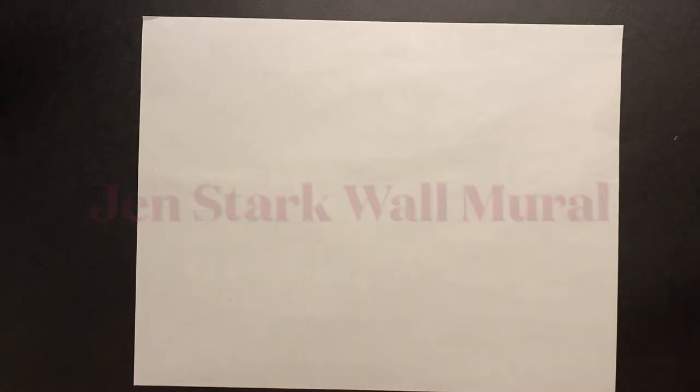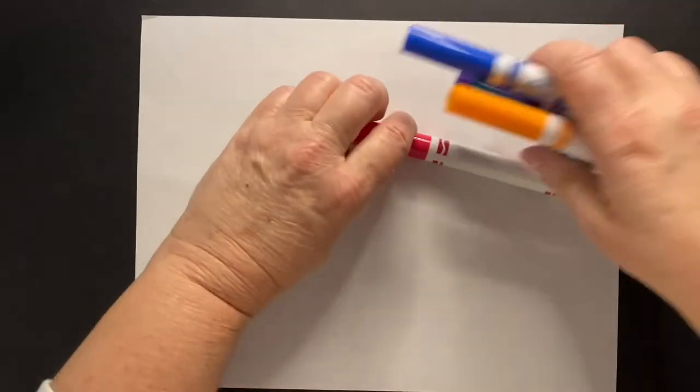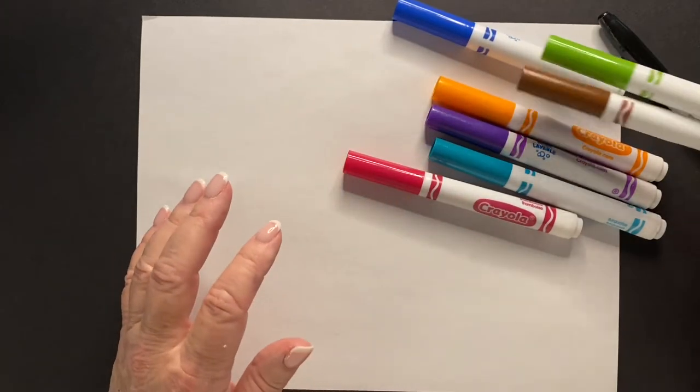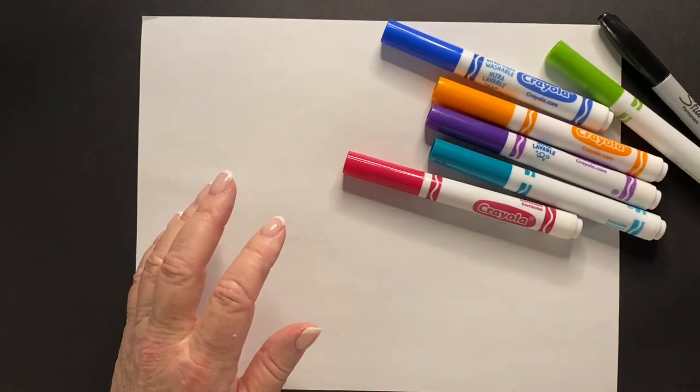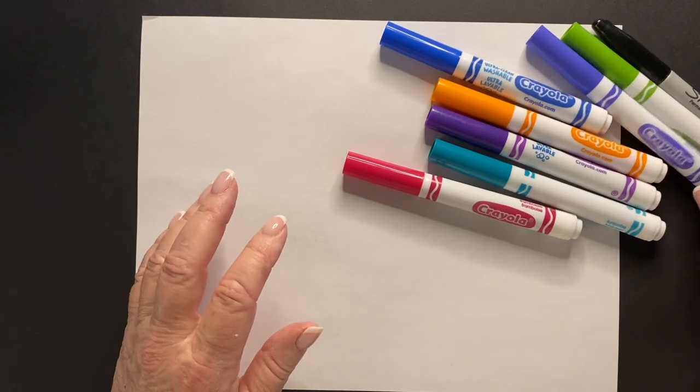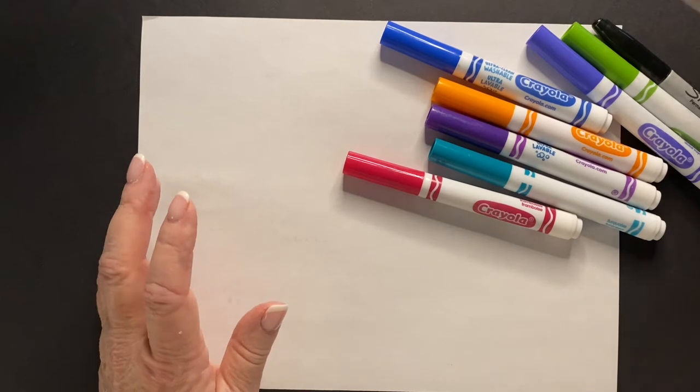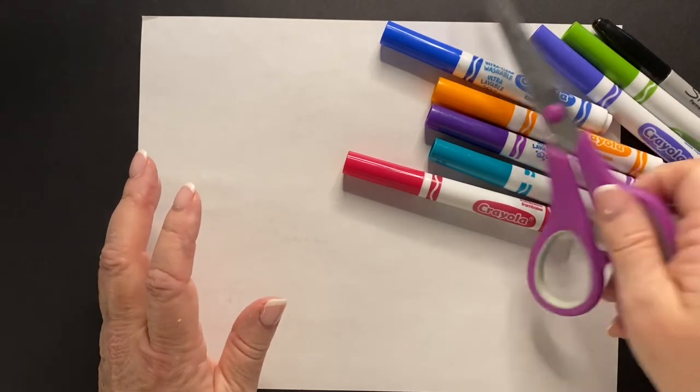Hi friends, so what you're going to need for this project: you're going to need a piece of copy paper, you're going to need a sharpie, you're going to need a variety of marker colors, just regular old markers, you can use crayons if you don't have markers, think bright colors like Jen Stark uses, and you're going to need a pair of scissors.